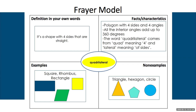Now let's dive a little deeper into that. Let's get out our text or look at some other resources to find some additional facts and characteristics about quadrilaterals. It's a polygon with four sides and four angles. All the interior angles add up to 360 degrees. The word quadrilateral comes from 'quad' meaning four and 'lateral' meaning of sides. Then we have a few examples — a square, a rhombus, and a rectangle — all of which meet the definition as well as the facts and characteristics.